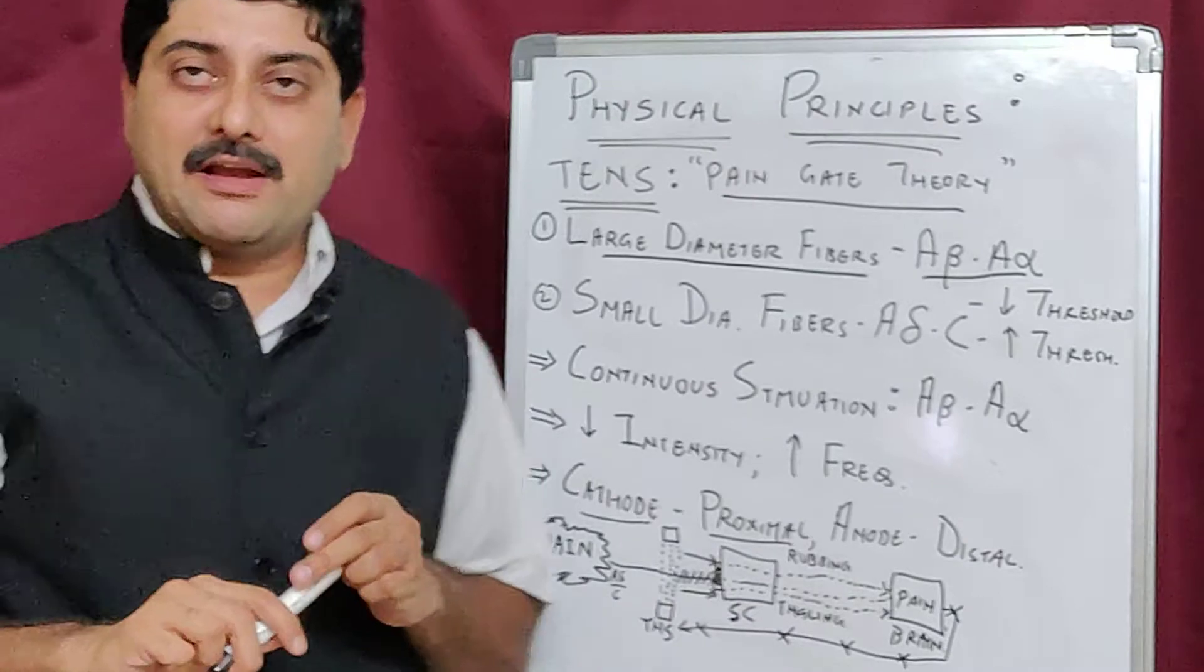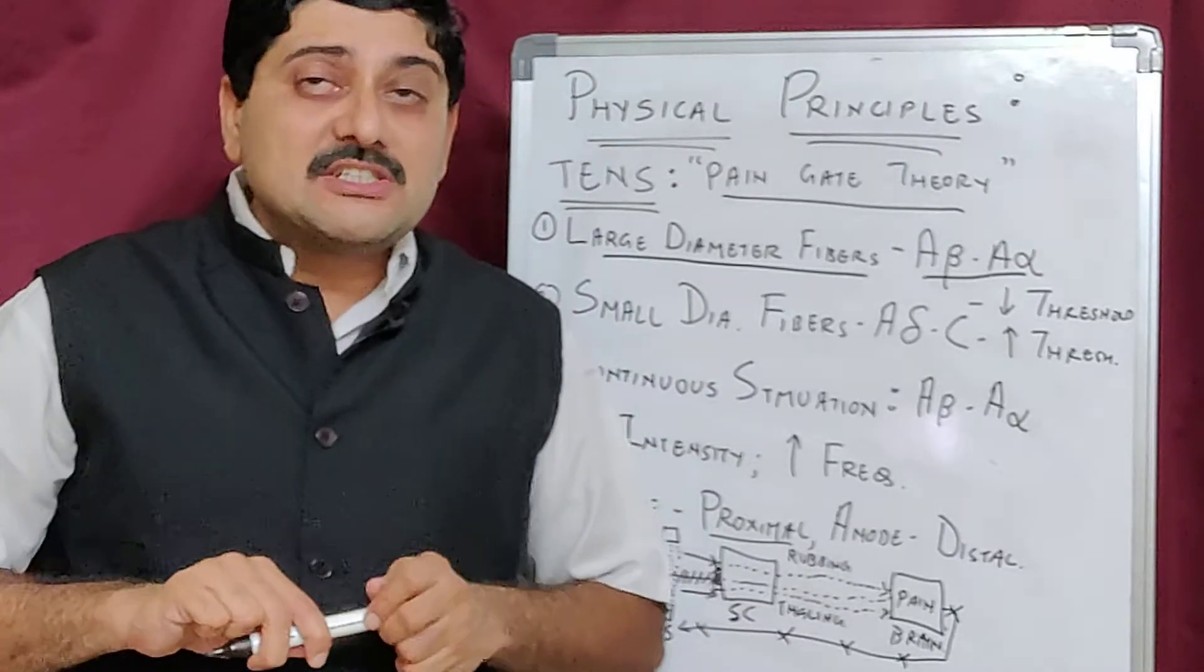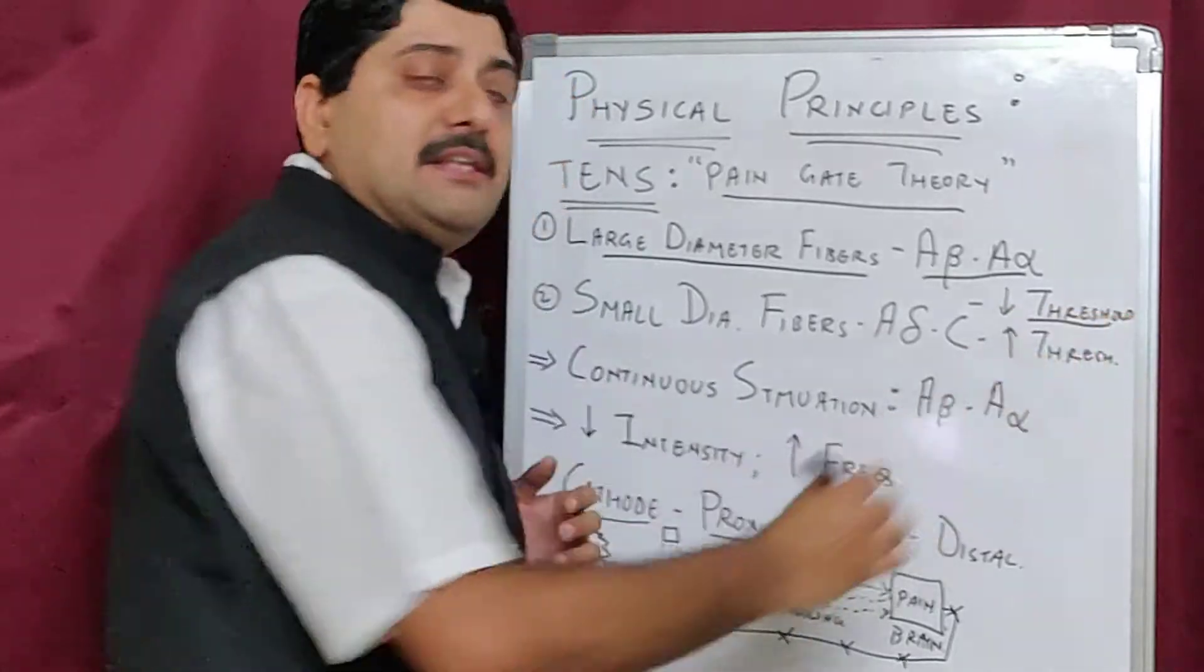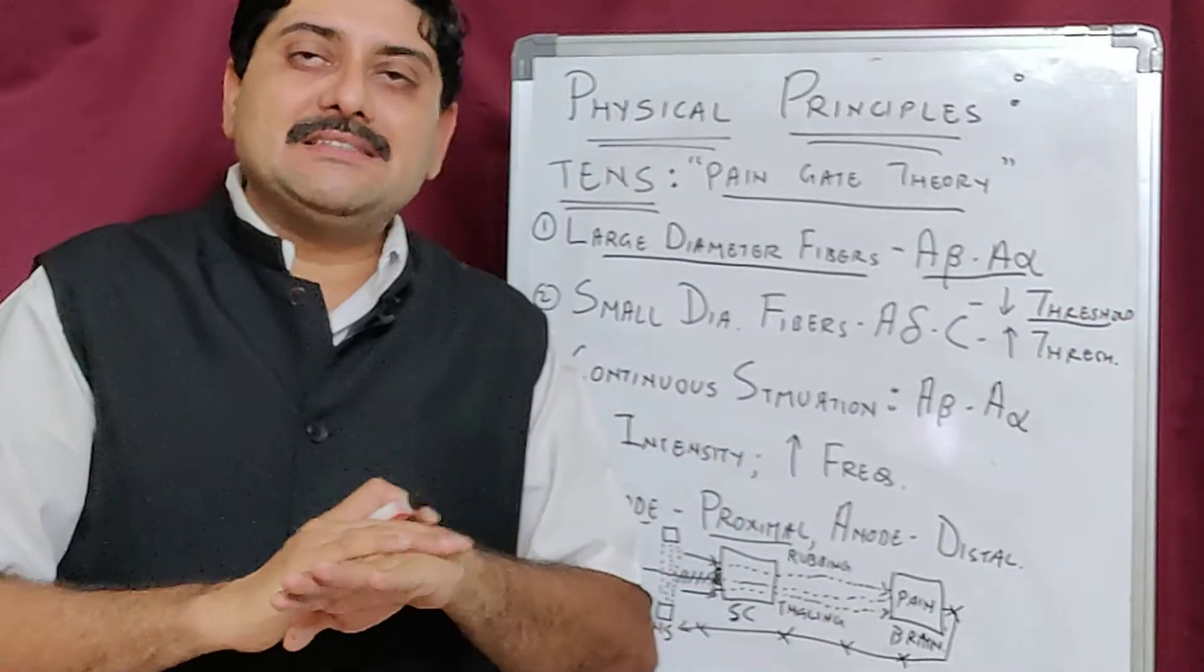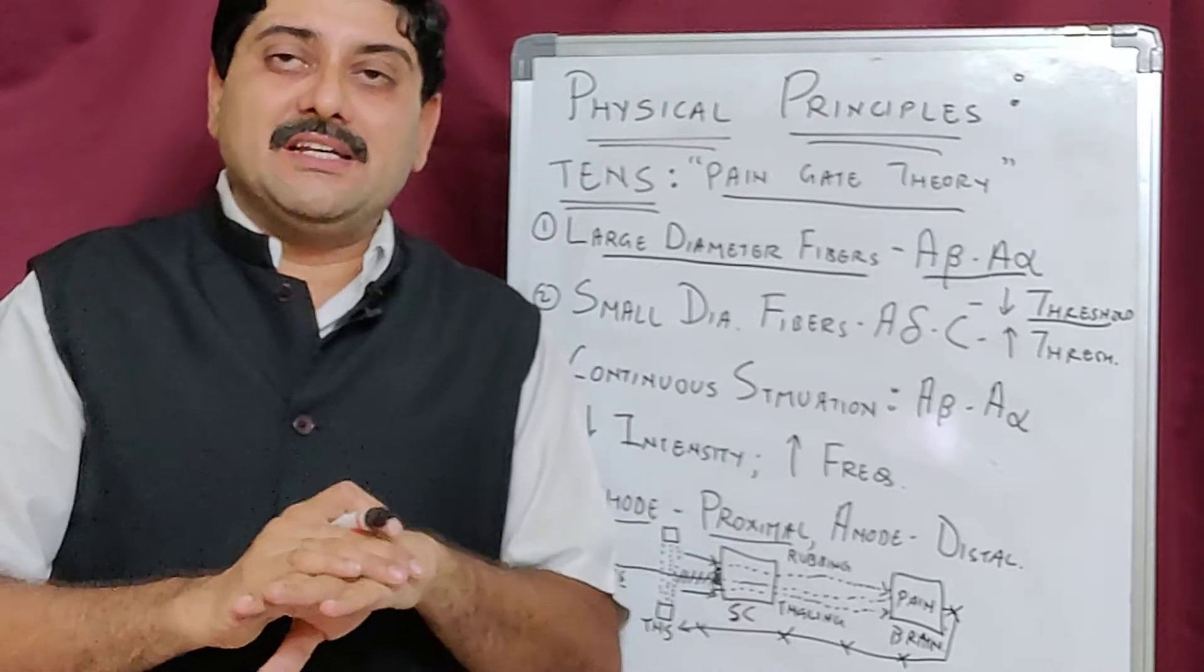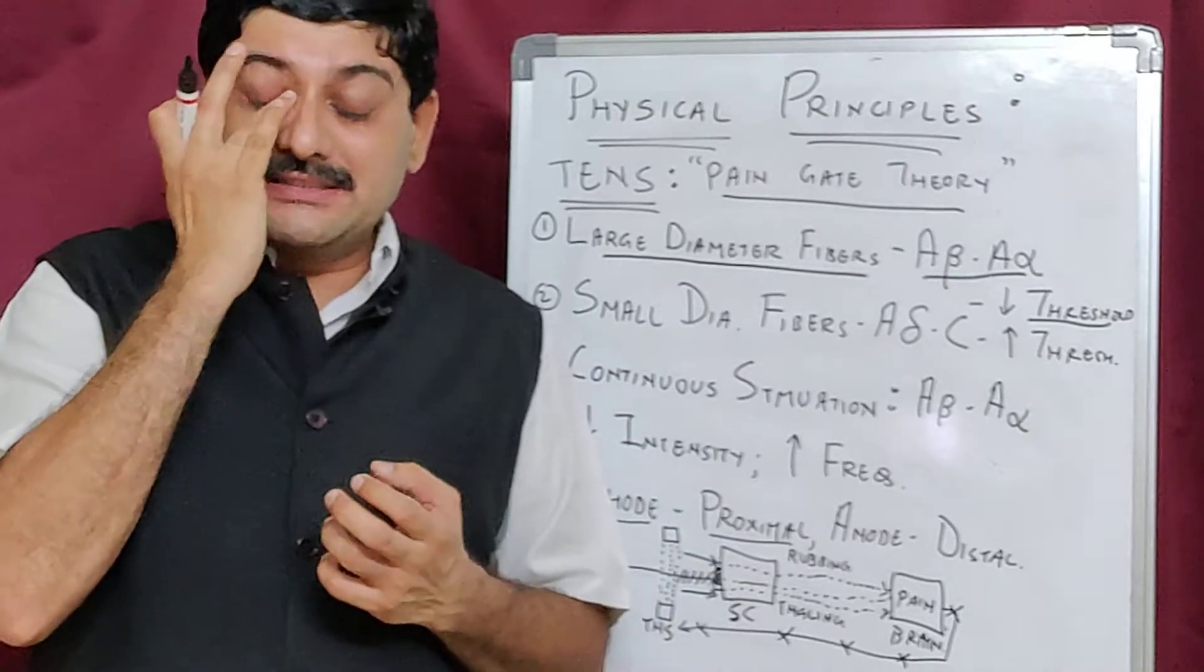These are large diameter fibers, so they have a lower threshold. When you apply something that causes irritation on the skin, either burning sensation or rubbing, this can stimulate the mechanoreceptors A-beta and A-alpha.